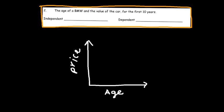I expect the price of the car to start fairly expensive, and then as time goes on it's not going to be as expensive. So as age increases, the price decreases. The independent variable is the age, and the dependent variable is the price.